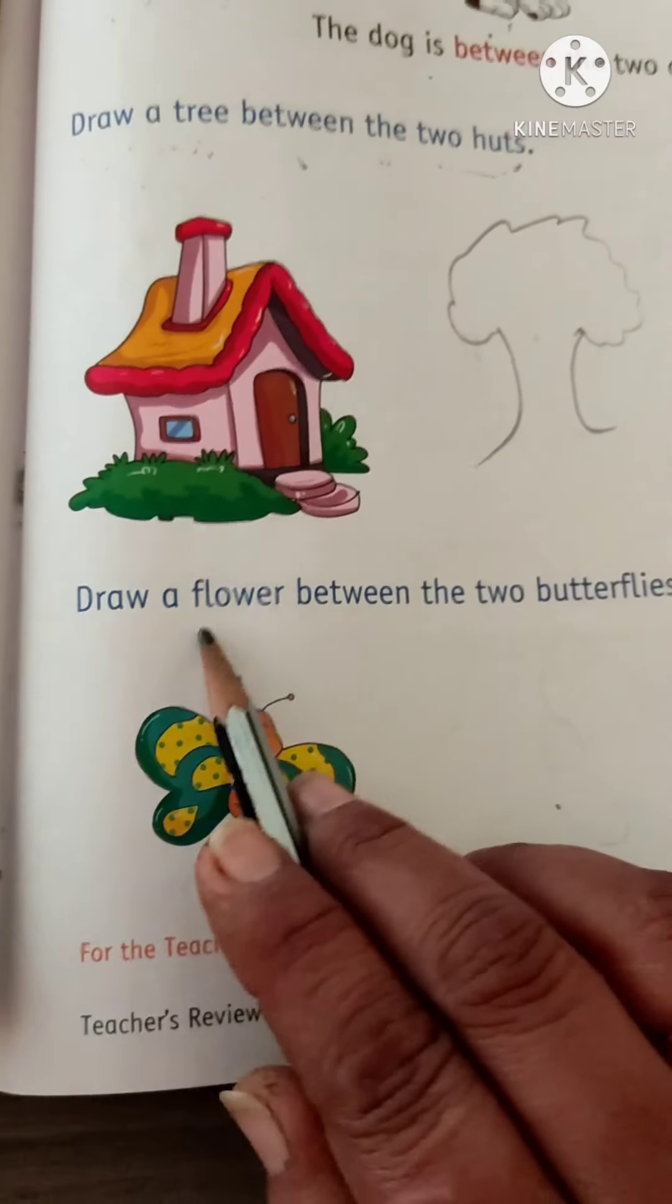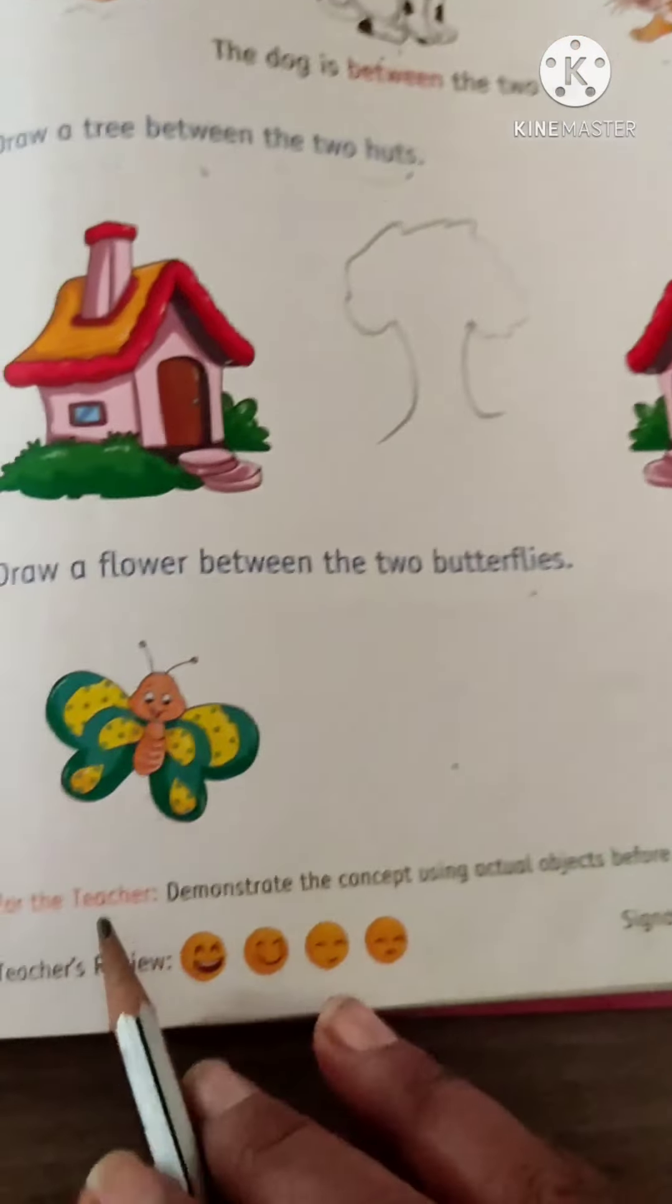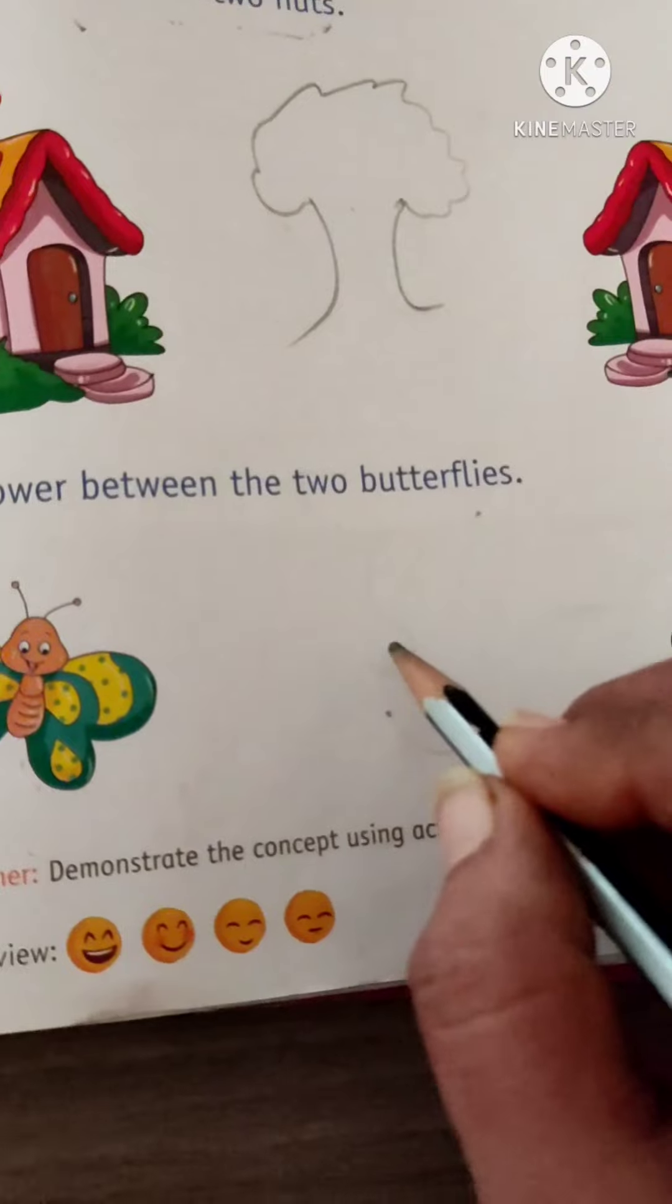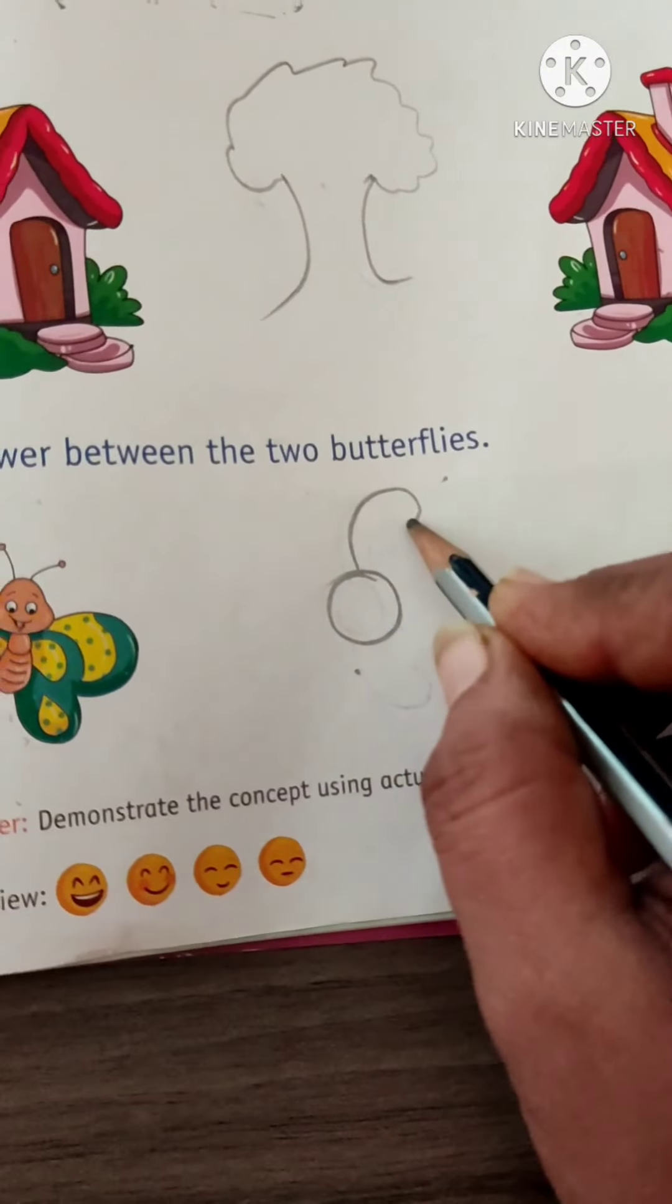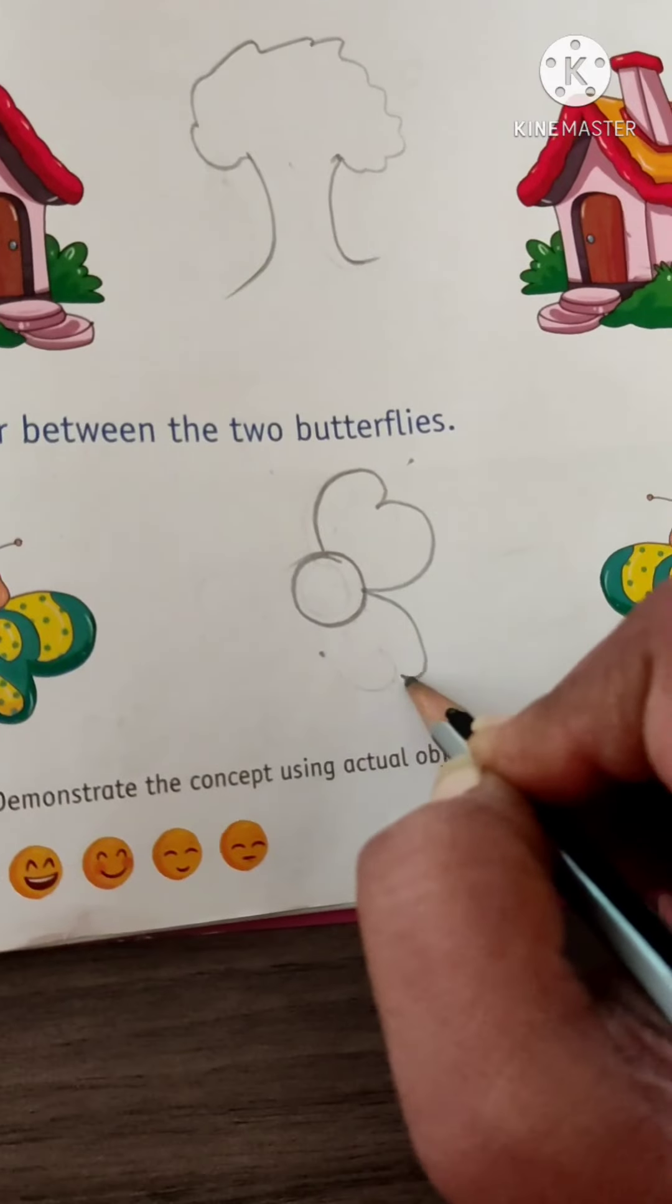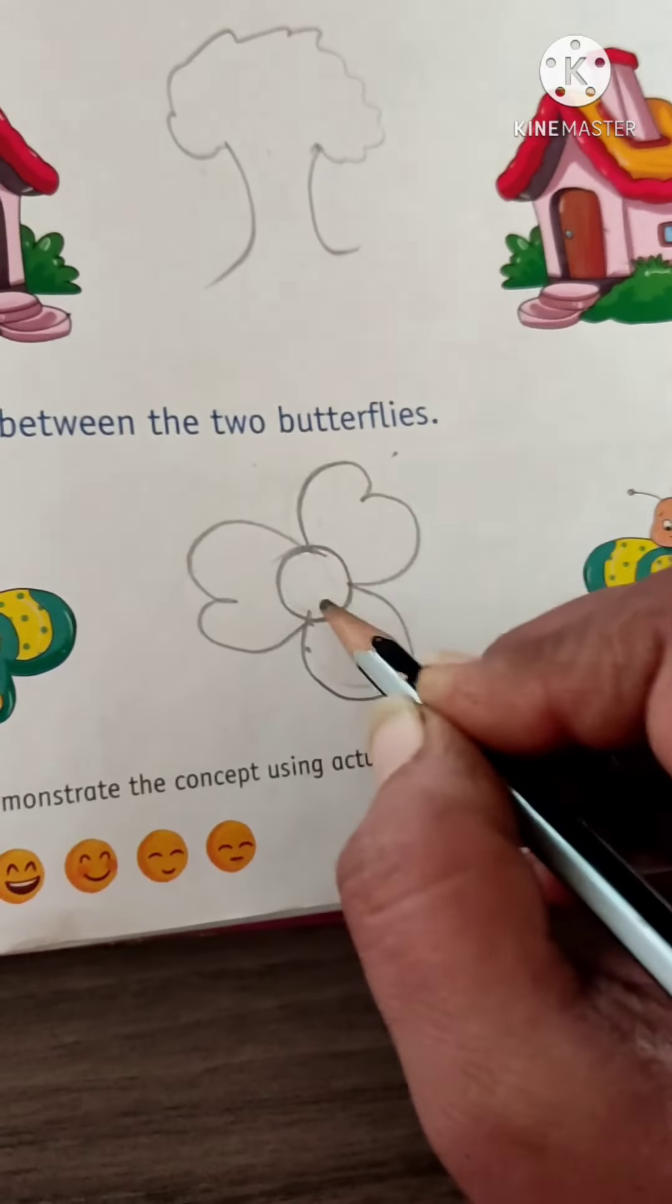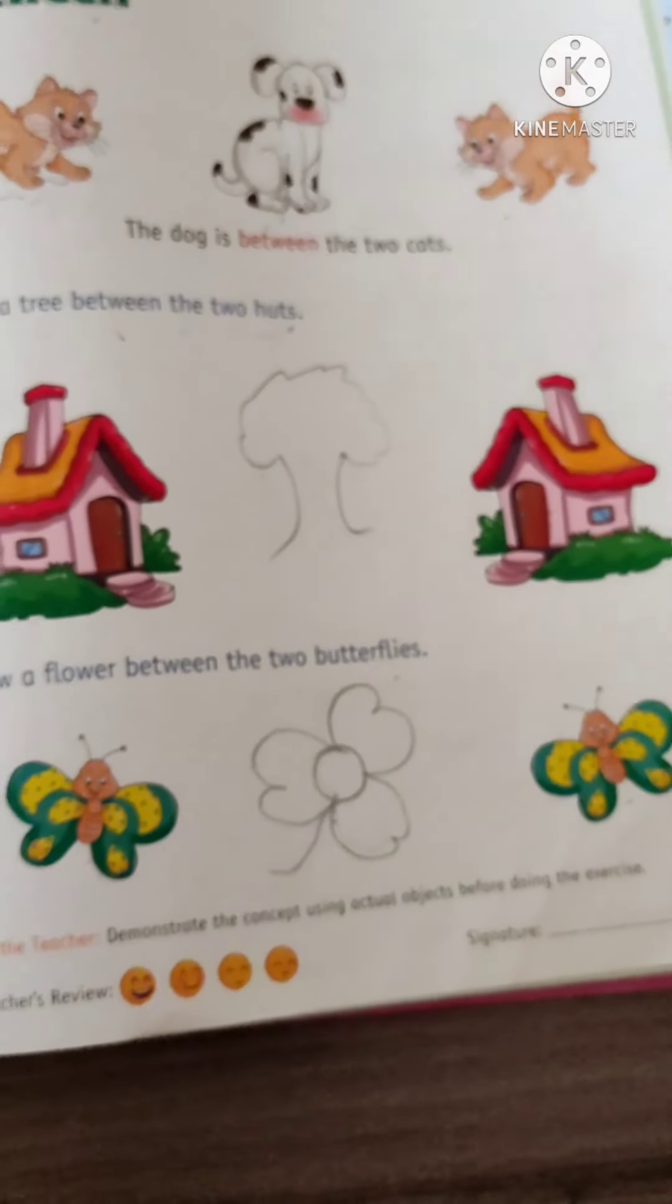Now, next. Draw a flower between the two butterflies. There is two butterflies, and we have to draw a flower. See, we have to draw a flower between the two butterflies. Got it?